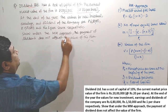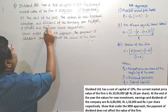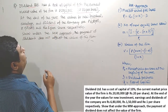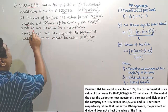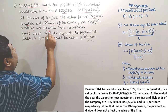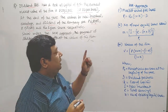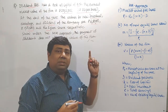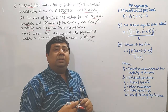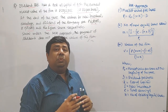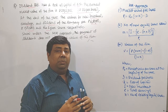At the end of the year, the values for new investments, earnings, and dividend of the company are Rs. 6 lakhs, Rs. 1 lakh, and Rs. 1 lakh per share respectively. So investment, earnings, and Rs. 1 lakh per share are the given figures.